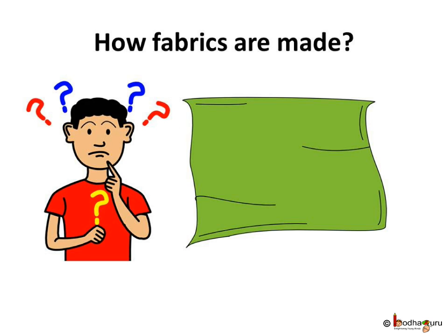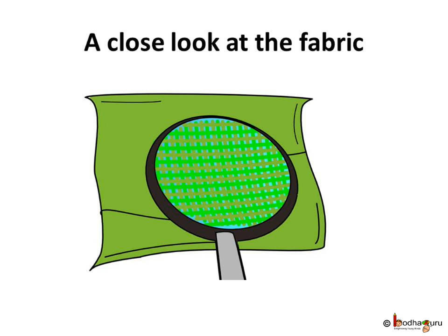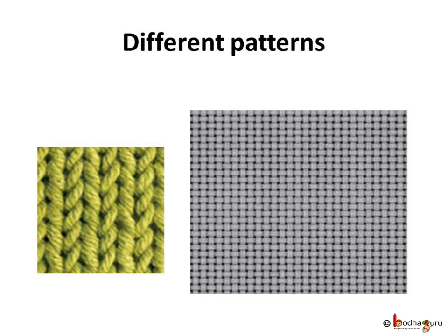Now let us understand how a fabric is made in general. From far, a fabric seems like a continuous piece. But if we observe it very closely or through a magnifying glass, we would find that there are many strings overlapping each other in a fixed pattern. The various strings may be criss-crossing each other or there may also be strings in the form of closed loops. This arrangement keeps the strings firmly together in the form of a cloth.